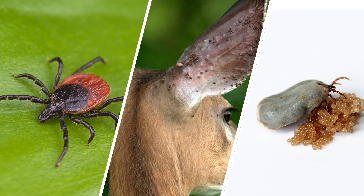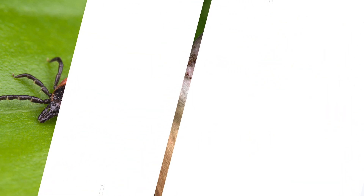In the fall, nymphs molt to adults that feed on white-tailed deer, but rarely on humans. White-tailed deer do not become infected with Lyme disease, but amplify the tick population by providing a blood meal for adult ticks. Adult male and female ticks mate on the deer. The following spring, adult female ticks lay eggs and the cycle is repeated.